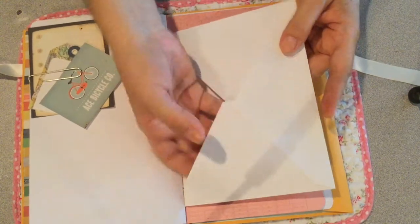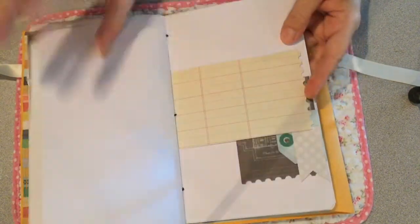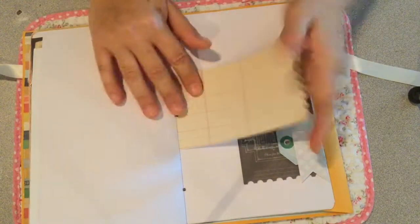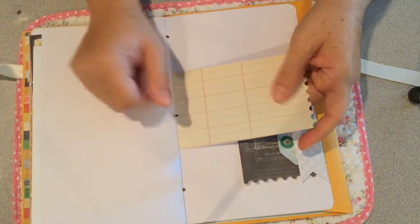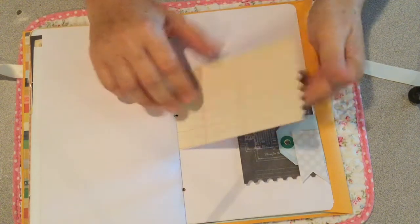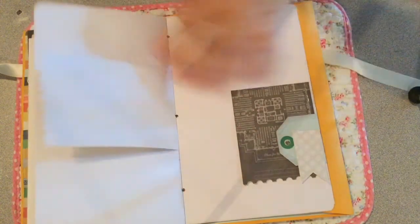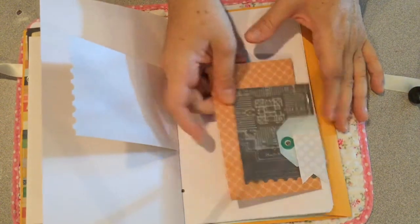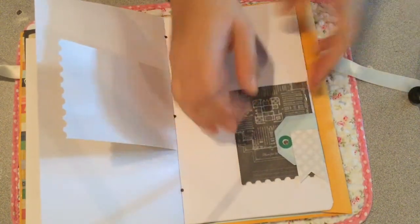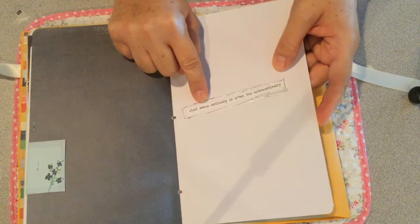The envelope here, that's the other half. This one I wish was going the other way, I wish the paper was facing the other way but that's okay. Here's another tuck spot, a layered tuck spot. This one says 'what seems ordinary is often the extraordinary.'